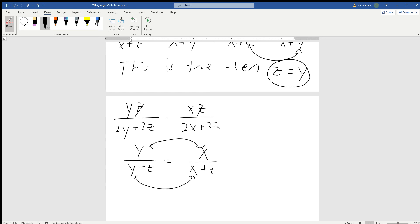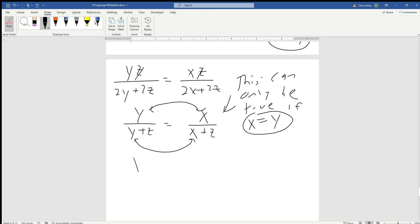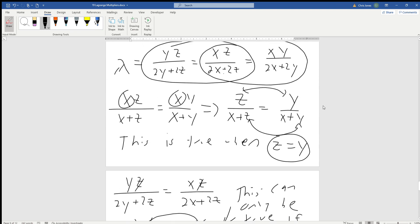So this is true. This can only be true if x is equal to y. And by transitivity, we already saw that z equals y and x equals y, so this means that x equals y equals z. And now we can go back up to the constraint.